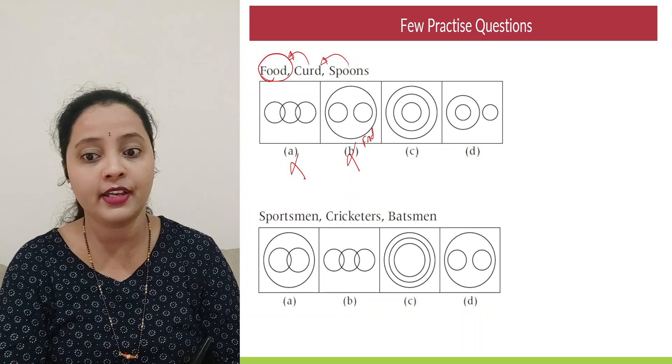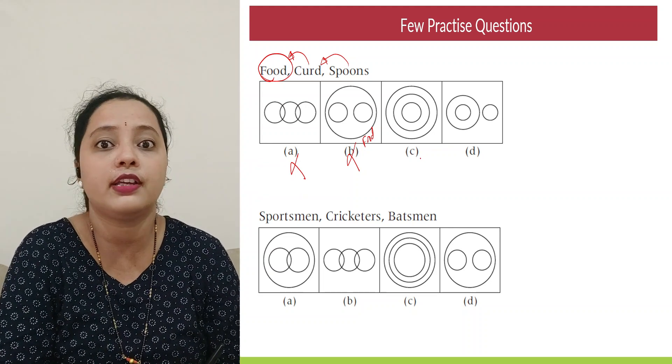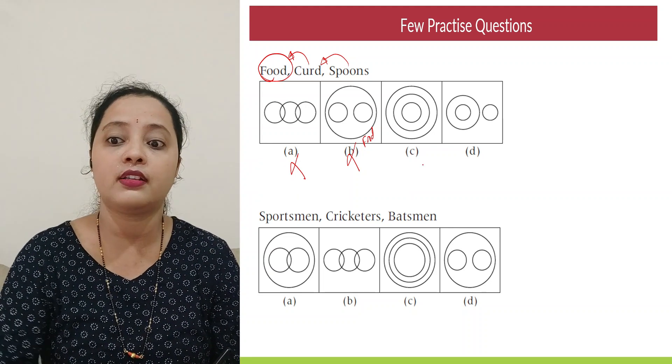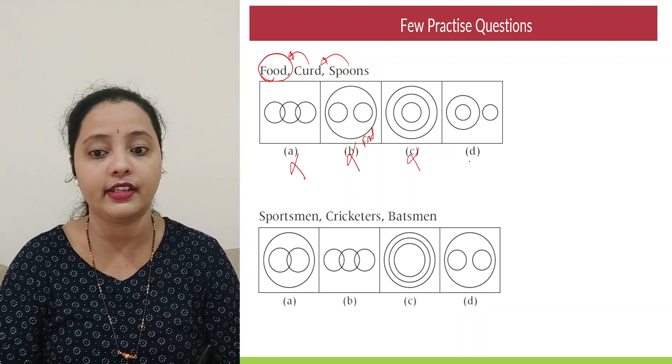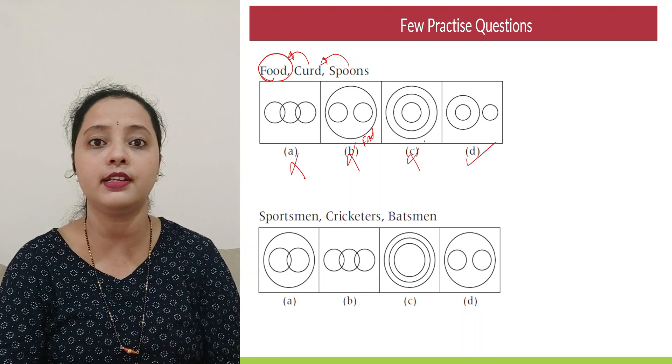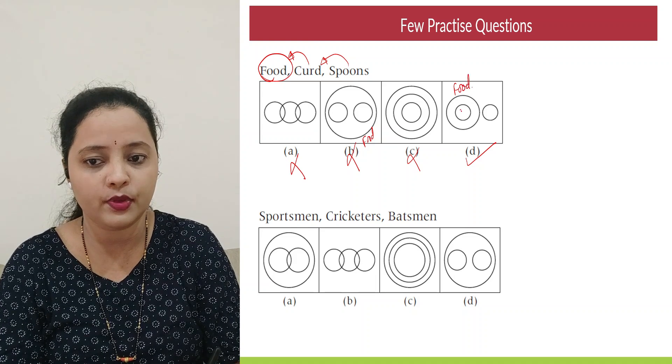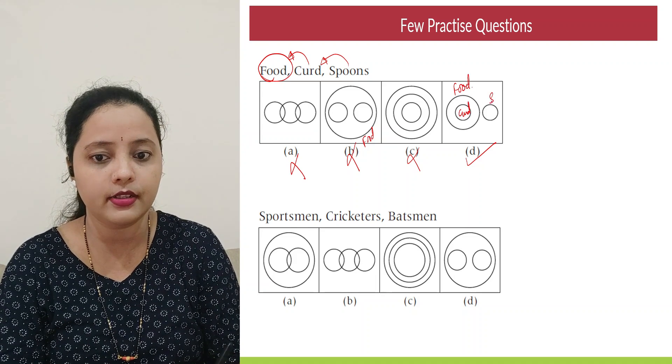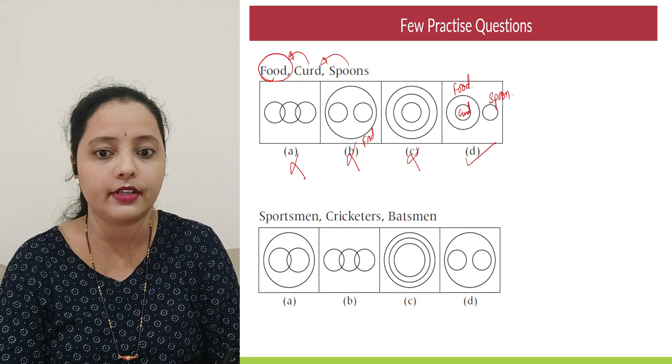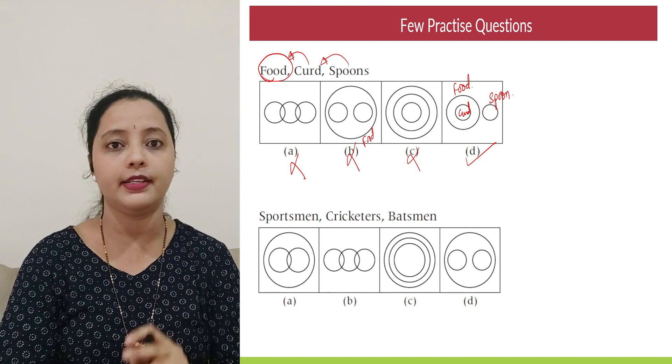C option, again not possible. Why? Because spoons, all spoons cannot be food. Or all foods are just not curd. So it's not getting in. So the only option that is possible is option D. Over here what would be the element? The outer circle would be food. The inner one is curd. And the small circle outside, that would be the value for spoon.